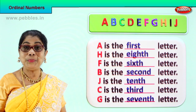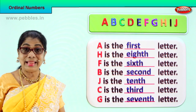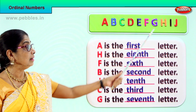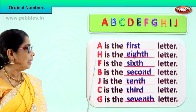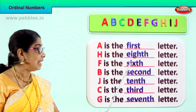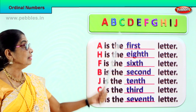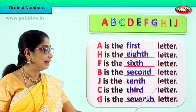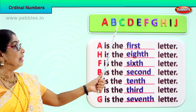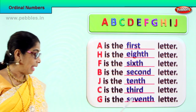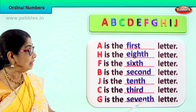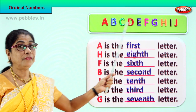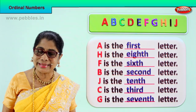Did you learn the position of each of these letters? Let's read: A is the first letter, H is the eighth letter, F is the sixth letter, B is the second letter, G is the seventh letter, C is the third letter. So we learned the ordinal position of each of these letters. Did you enjoy the exercise? Good.